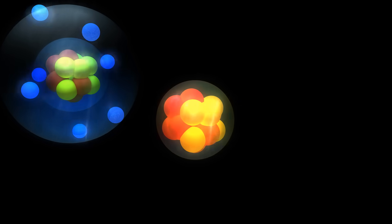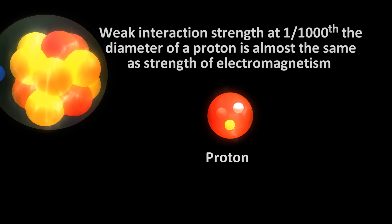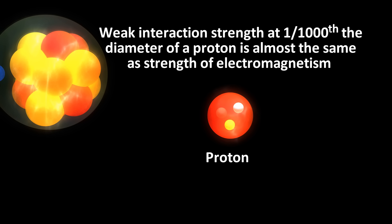The interesting thing about the weak interaction is that its strength at a range of one one-thousandth the diameter of a proton is almost the same as that of electromagnetism. And it was this insight that led to the unification of electromagnetism with the weak force — the electroweak theory. I will have a dedicated video on this theory in a future video.